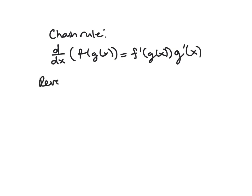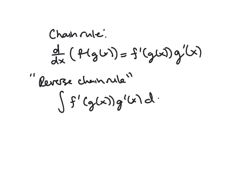So if you want to do some sort of reverse chain rule, what would that mean? Well, we can just go backwards. So if you see something of the form f prime of g of x times g prime of x dx and you want to take the antiderivative — the indefinite integral — this would just be f of g of x.